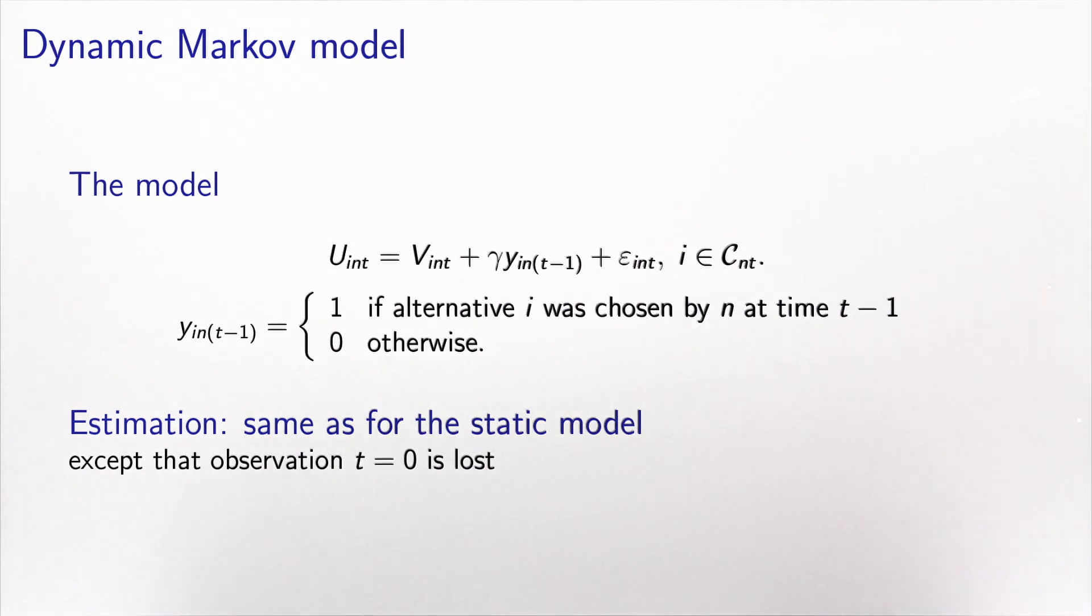The model is simple. The utility function at time t for individual n and alternative i is composed of a deterministic part, a random part, and an additional explanatory variable: the choice performed at time t minus 1, characterized by the binary variable we just introduced. This is the same as the static model except we have included one additional variable. The only consequence is that the observation for t equals 0 is lost because we don't have access to the choice of the previous time interval.